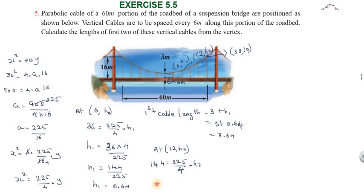So h2 equal to 144 into 4 by 225. 144 into 4 equals 576 by 225. When we divide, this gives us 2.56.